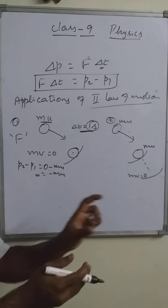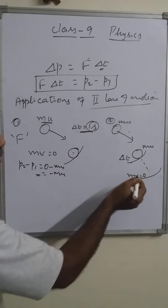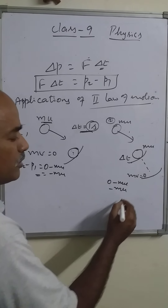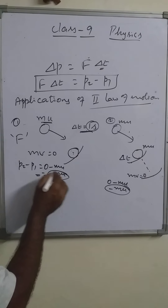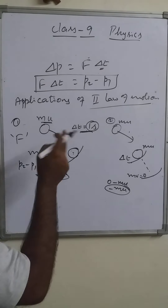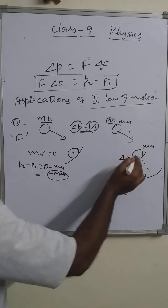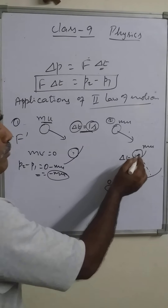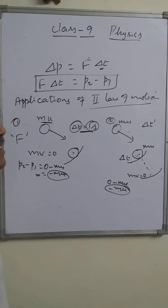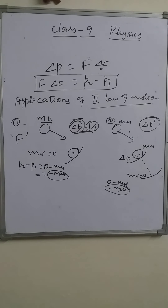To lower the hand from the initial position to the final position definitely takes some time — that time is delta t'. Comparing the two cases: in both cases the change in momentum is the same, minus mu. But the delta t' in the second case — the time taken to change the momentum — is somewhat longer than the first case. So delta t' is obviously greater than delta t.